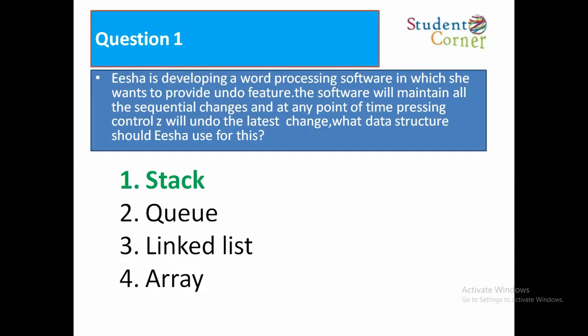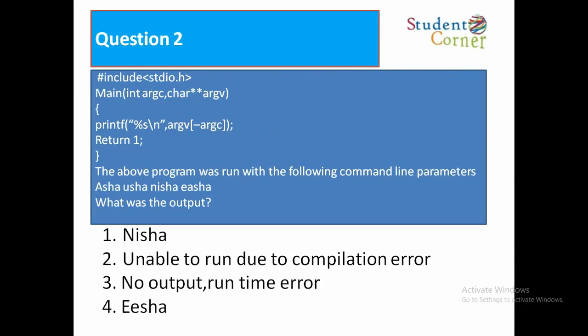Question 2: #include stdio.h, main(int argc, char **argv) printf("%s", argv[-argc]); return 1. The above program was run with command line parameters: Asha, Usha, Nisha, Isha. What was the output? argv[3] will contain Isha, so the output will print Isha.